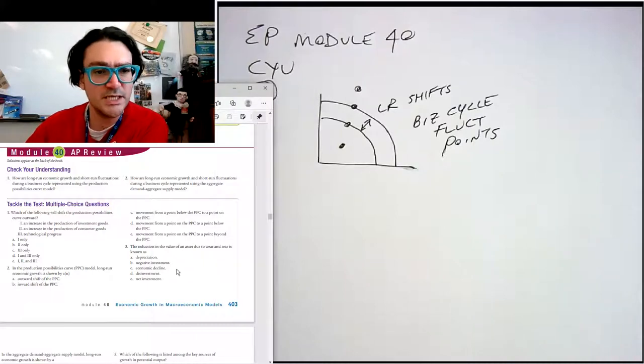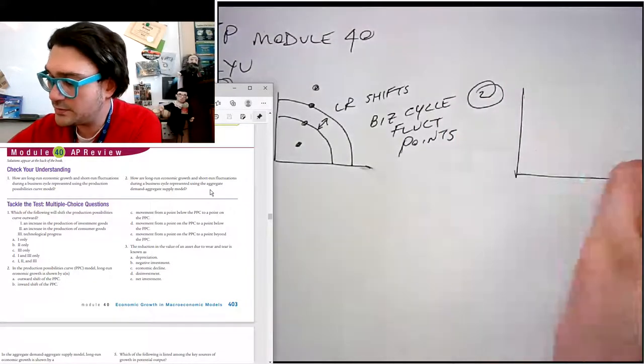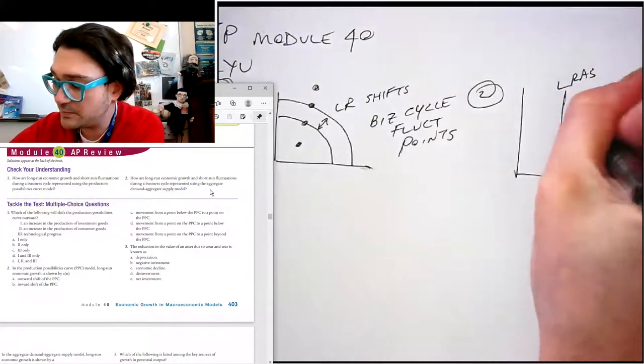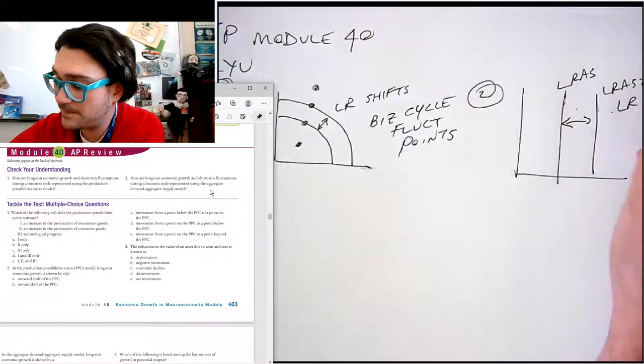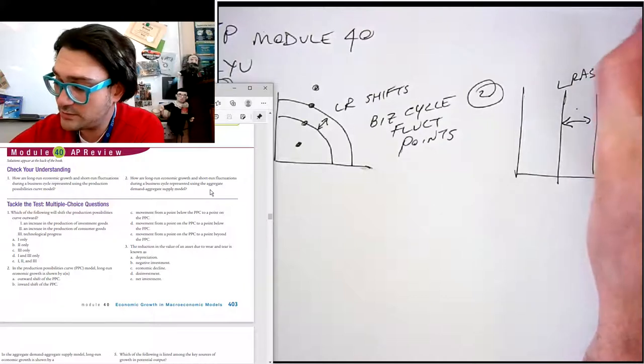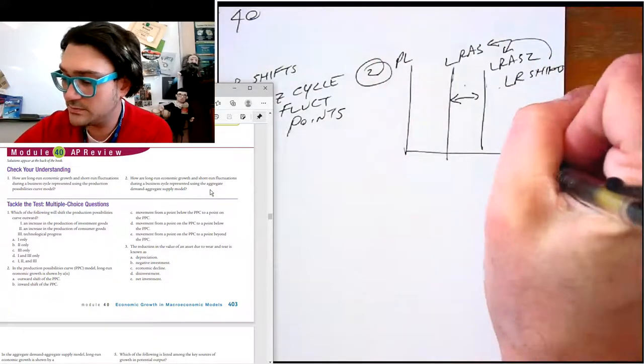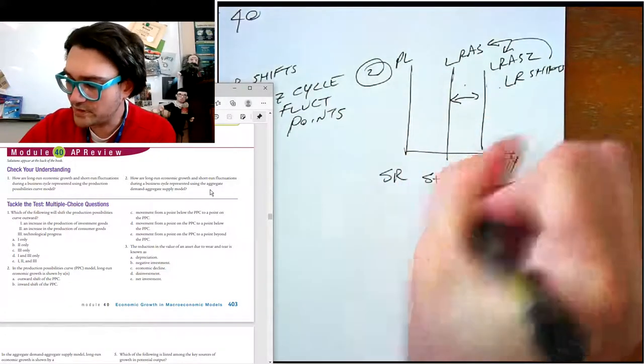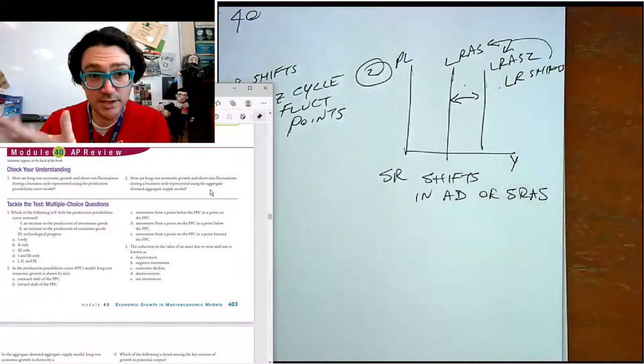The second part says, how are long run growth and short fluctuations using ADAS. And so here, long run would be LRAS moving back and forth, right? So long run are shifts in what we call the long run. I'll move that over there. That's PL, that's Y. But the short run are shifts in AD or SRAS. And that's how we model short run shifts.